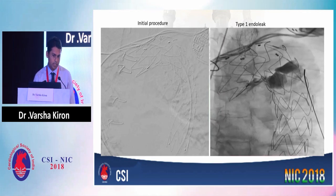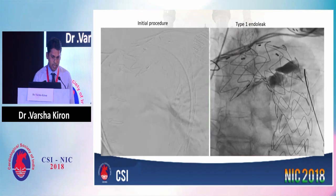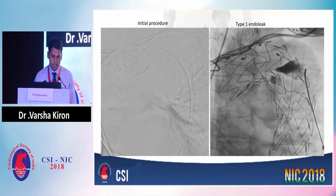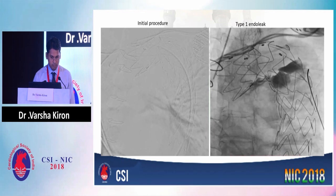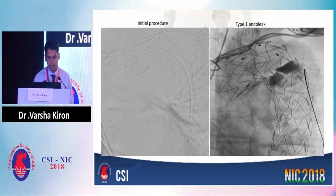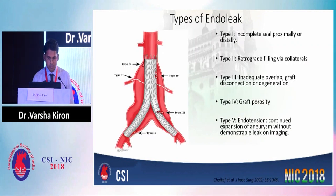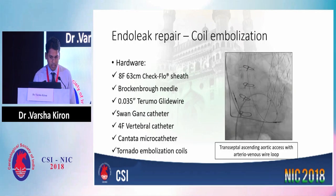We had to re-strategize. On the right, this is the end of the initial procedure in April 2017, and this is the current one. There is an evident gap which had formed at the proximal portion of the endograft, which led to this type 1 endoleak that was not there to begin with. We presumed it to be a type 2 endoleak, but it turned out to be a type 1, which is usually seen immediately post-procedure — unfortunately, it happened much later.